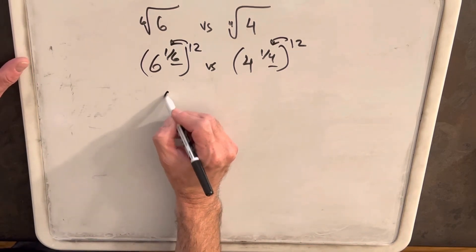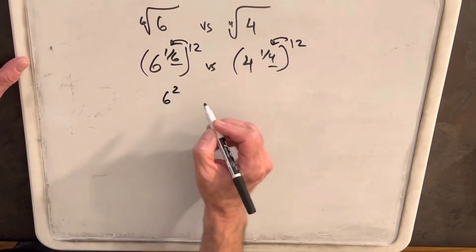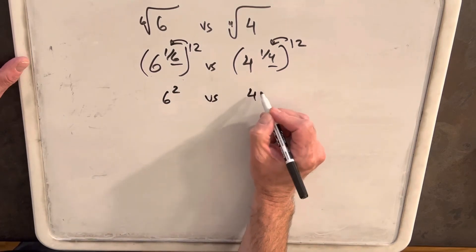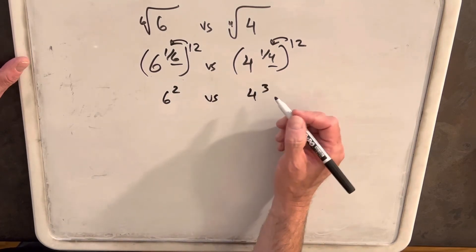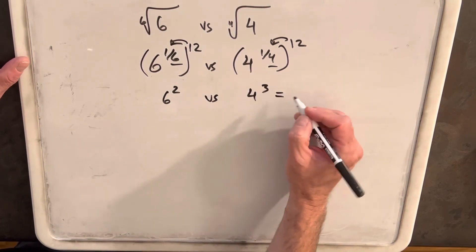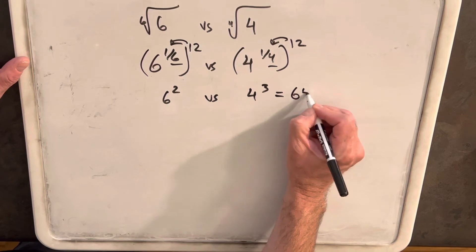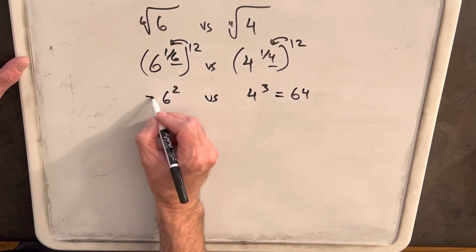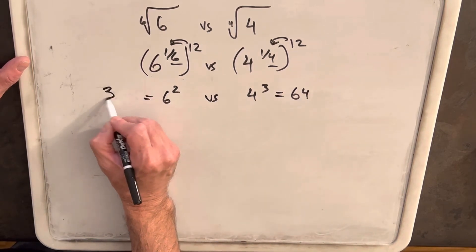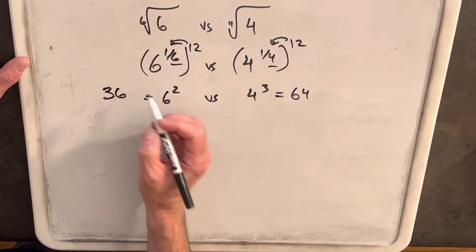So we're going to have 6 squared versus 4 cubed. 4 cubed is 64, and 6 squared is just 36.